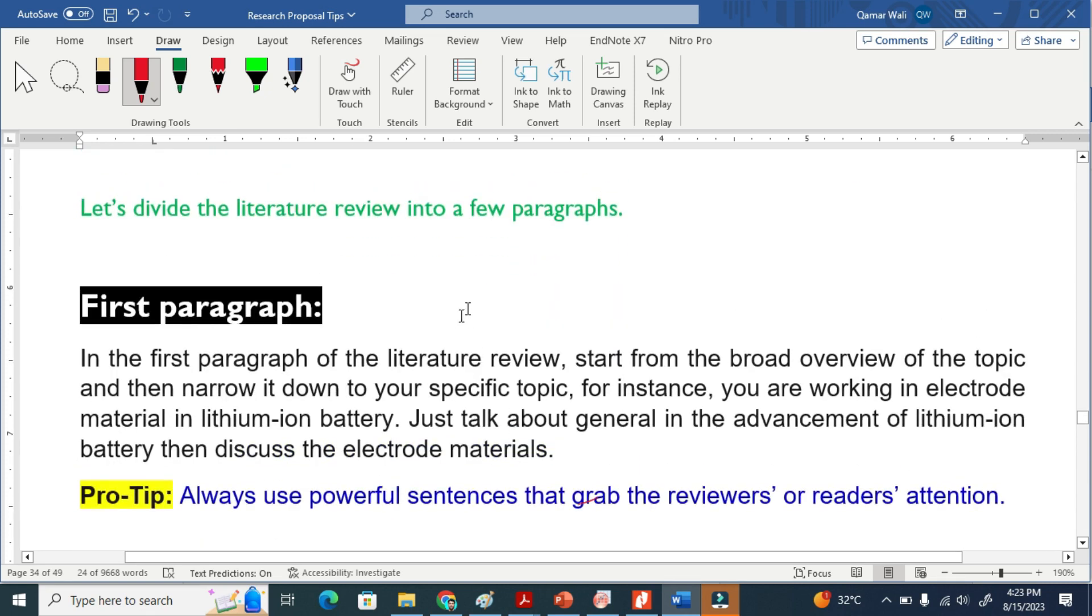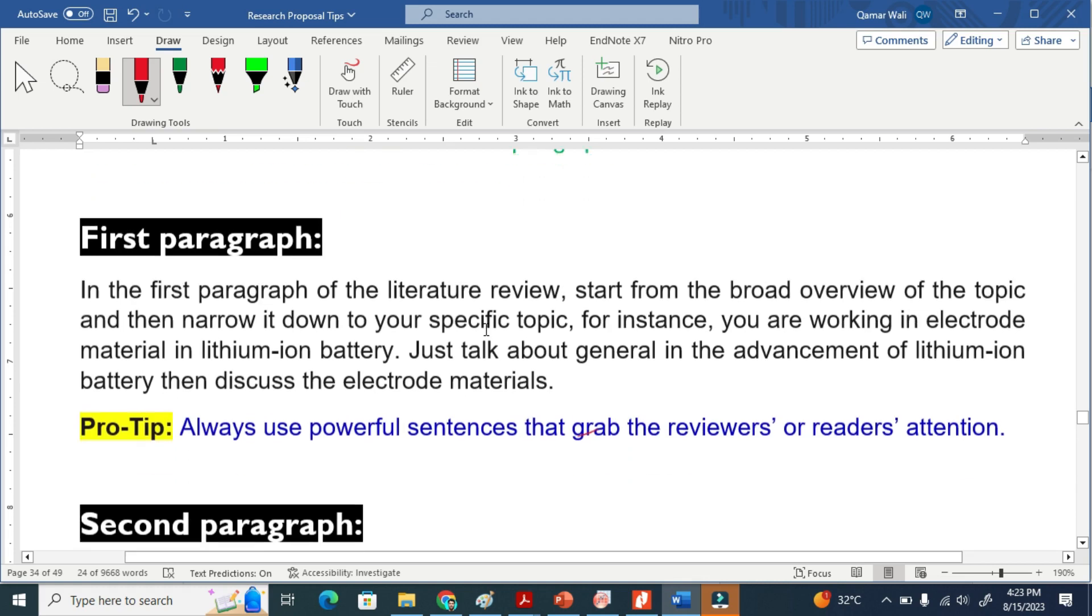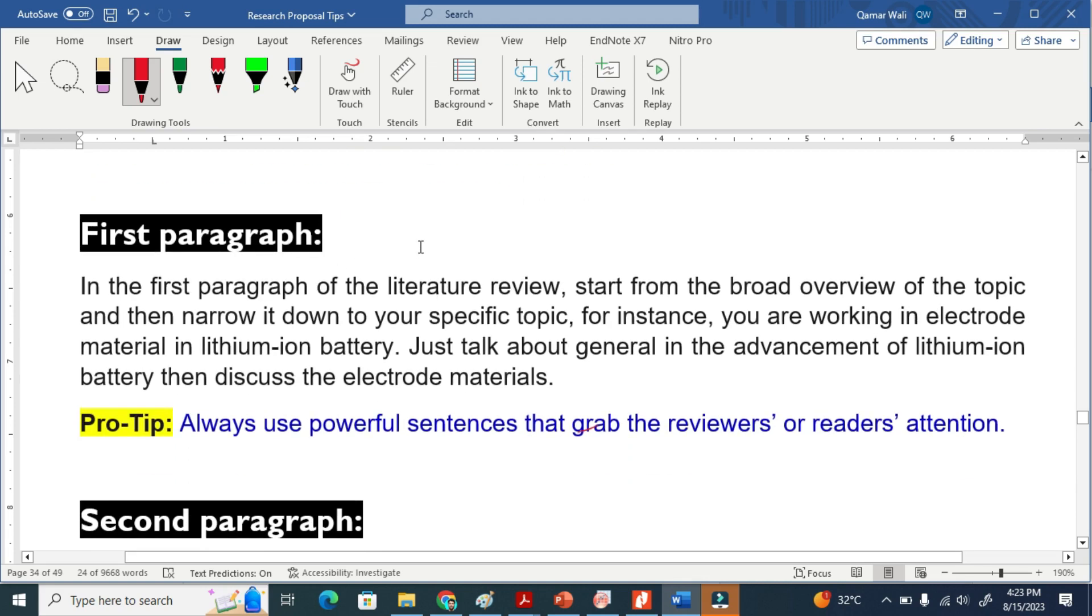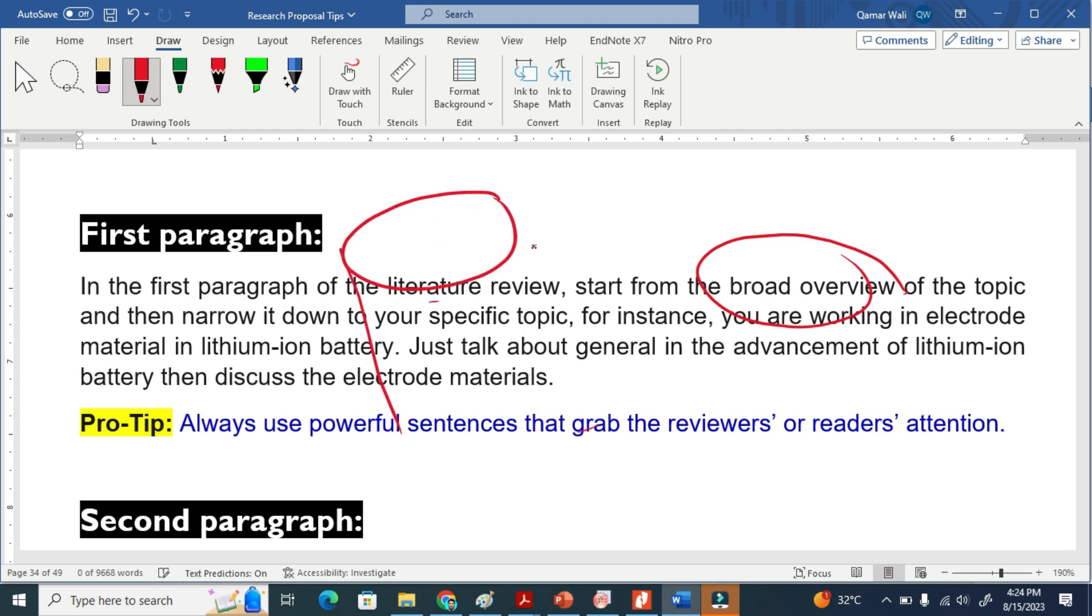Let's divide literature review into a few paragraphs. The first paragraph - as I explained many times in my introduction video - once we are writing literature review, we have to start from general overview of the topic. This means that we have to use the funnel approach. This is the broad overview, and this is basically the specific or narrow.